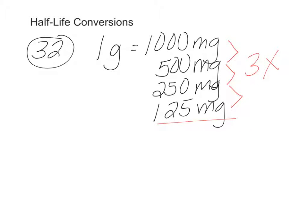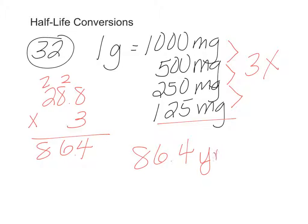And so the problem told us that the half-life was 28.8 years. And so we want to multiply that by three. We're going to do our long division problem here. So our answer here is 86.4 years.